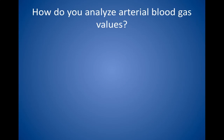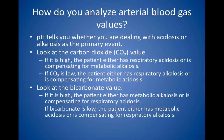Question 1: How do you analyze arterial blood gas values? Remember three basic points. One, the pH tells you whether you are dealing with acidosis or alkalosis as the primary event. The body will compensate as much as it can as a secondary event.